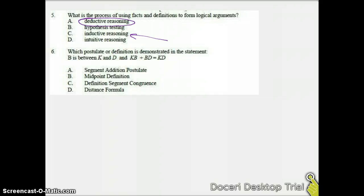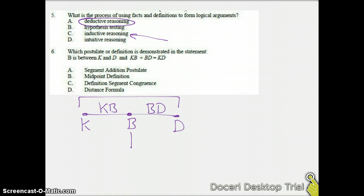For number six, which postulate or definition is demonstrated? We have B is between K and D. So let's draw that. And then I'm saying that KB plus BD equals the whole thing of KD. So I'm adding the parts together. I don't know necessarily if B is in the middle. So we don't want to assume it's midpoint. They're not asking us for a length, so it's not going to be distance. And we have nothing about them being congruent. But we're adding up the parts, setting them equal to the whole. That would be segment addition postulate.